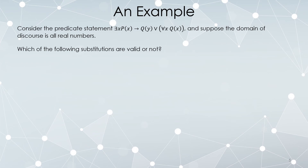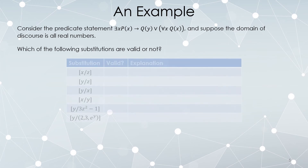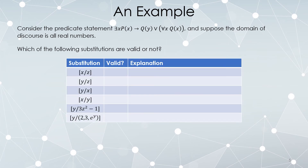Let's look at an example. Here is a predicate statement, and suppose the domain of discourse is all real numbers. We'll look at a bunch of possible substitutions and ask whether they're valid or not. First: can I replace every instance of x with z? No, because x is a bound variable — there is no procedure for substituting a bound variable.